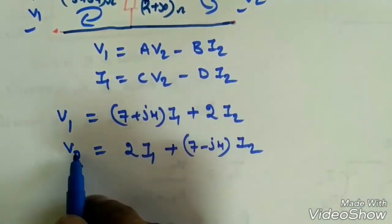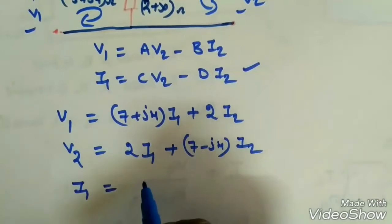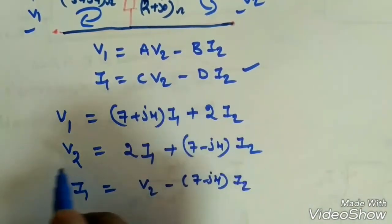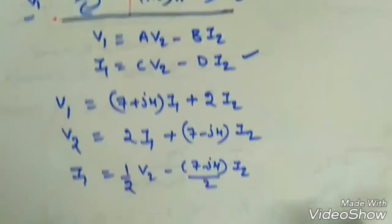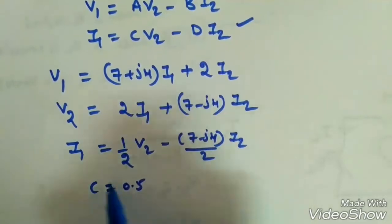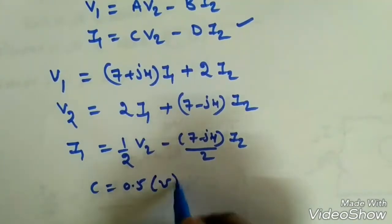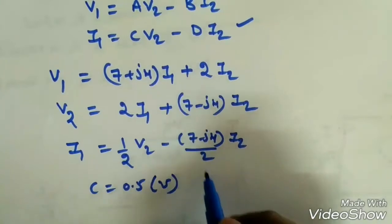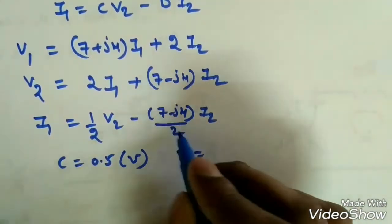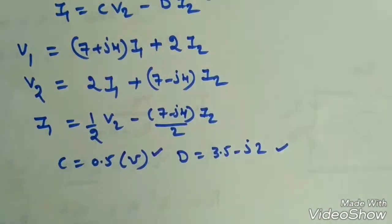From the V2 expression, solving for I1: I1 = [V2 − (7 − j4)I2] / 2. This gives I1 = (1/2)V2 − [(7 − j4)/2]I2. So C = I1/V2 = 0.5, and D = −I1/I2 coefficient = (7−j4)/2, meaning D = 3.5 − j2.